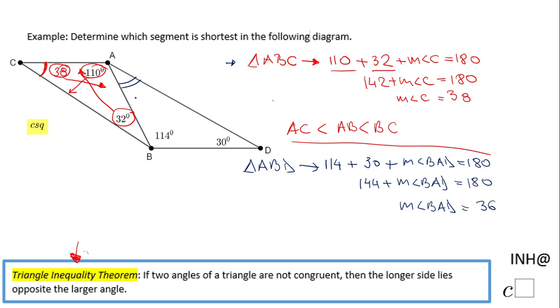This angle here is 36 degrees. Now we can use the Triangle Inequality Theorem for this triangle. The smallest angle is 30, so the shortest side will be AB. Then the next side will be BD, which goes with 36.